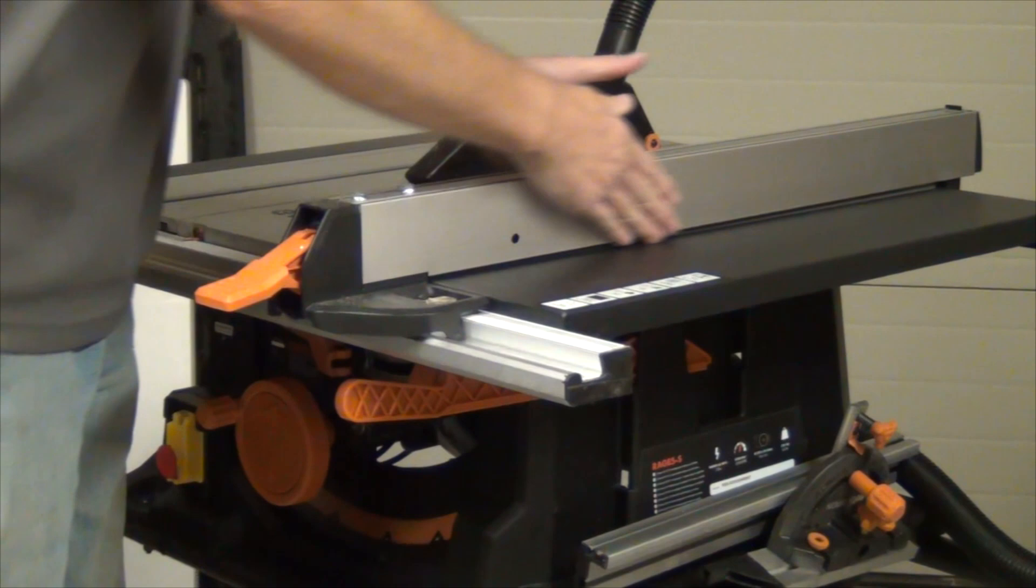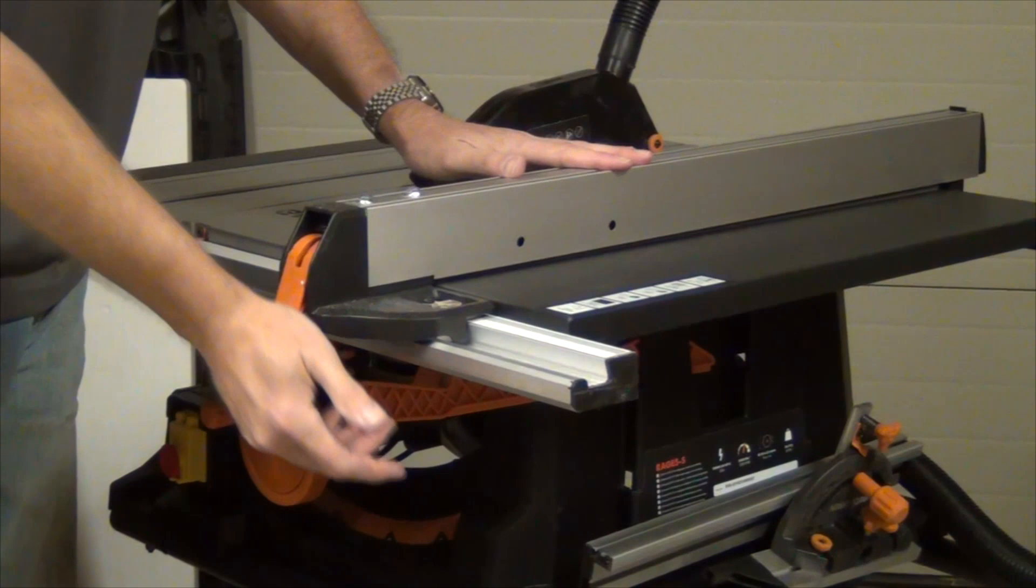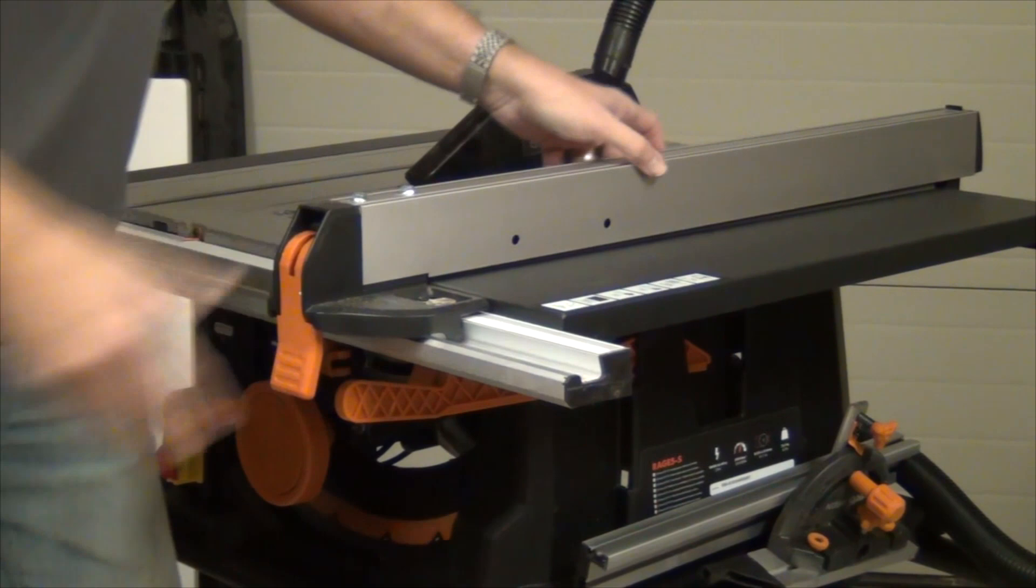The rip fence, nice and beefy, and has perfectly parallel sides, so it's easy to attach jigs to it. It has a very positive hold here, and it clamps both at the front and to the rear of the table, making it really solid.